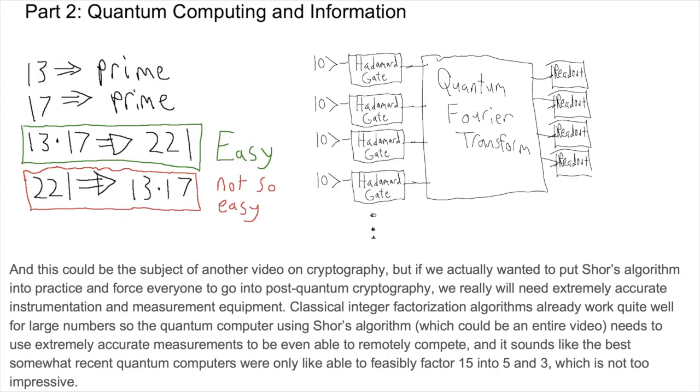And this could be the subject of another video on cryptography, but if we actually wanted to put Shor's algorithm into practice and force everyone to go into post-quantum cryptography, we really will need extremely accurate instrumentation and measurement equipment. Classical integer factorization algorithms already work quite well for large numbers, so the quantum computer using Shor's algorithm, which could be an entire video, needs to use extremely accurate measurements to be even able to remotely compete. And it sounds like the best somewhat recent quantum computers were only able to feasibly factor 15 into 5 and 3, which is not too impressive.